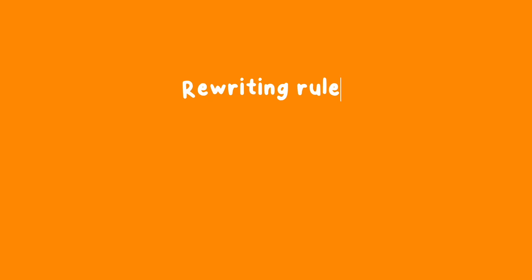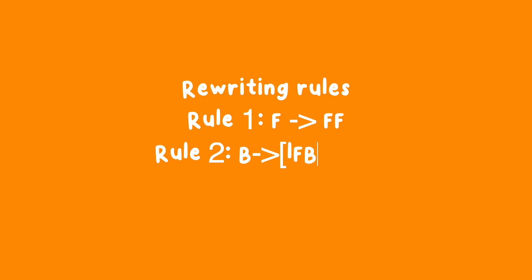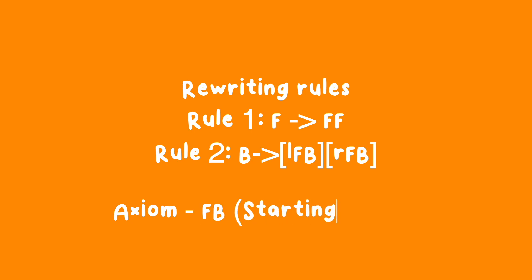For my implementation in Unity I'll use an L-system with the alphabet we saw earlier. My axiom is going to be FB and I have two rewrite rules: when I see a branch, I'm going to double its length so F turns into FF, and when I see a branching-off point represented by B, I'm going to put two branches there — one rotated to the left and one to the right. We'll do that for a few iterations so each branch will be branching off into two branches.